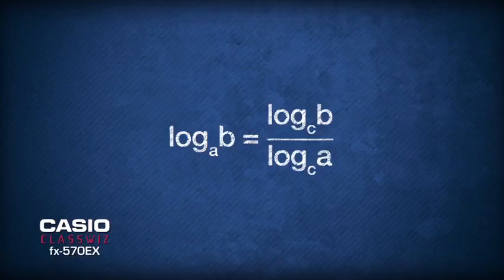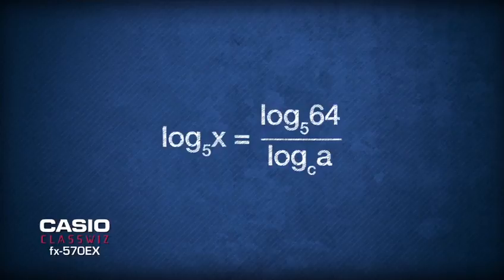Following the formula, the right hand side of the equation becomes logarithm base 5 of 64 over logarithm base 5 of 25.